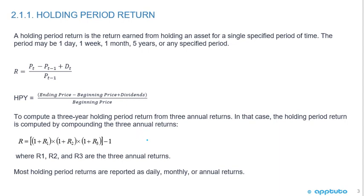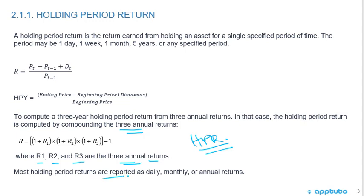This slide adds a bit of new information. If we're given, for example, three annual returns — a return for year one, year two, and year three — and we want to calculate the holding period return given those three returns, we're going to compound the three annual returns. It's (1 + R1) times (1 + R2) times (1 + R3) minus one. Most holding period returns are reported as daily, monthly, or annual returns.